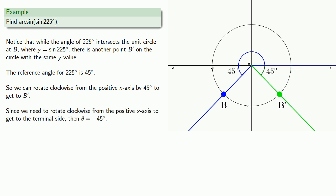Since we need to rotate clockwise from the positive x-axis to get to the terminal side of this angle, then theta is minus 45 degrees. And so that says a fourth quadrant angle theta, where sine of theta is the same as sine of 225 degrees, is theta equals minus 45 degrees. And so the arcsine of the sine of 225 degrees is minus 45 degrees.